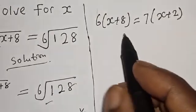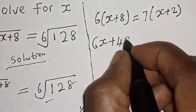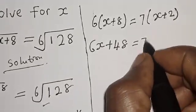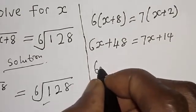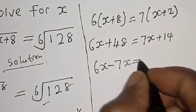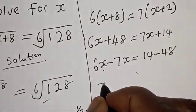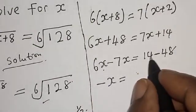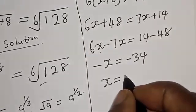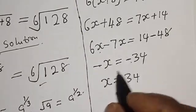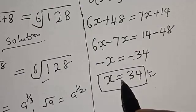Opening the brackets: 6x plus 48 is equal to 7x plus 14. Collecting like terms, bringing 7x to the left side: 6x minus 7x equals 14 minus 48, giving minus x equals minus 34. Therefore x equals 34. That is our final answer. If you enjoyed the class, please don't forget to like, share, comment, and subscribe. Thank you.